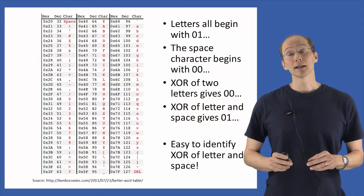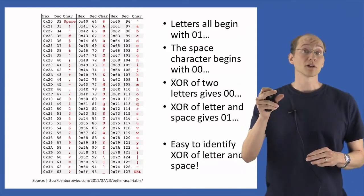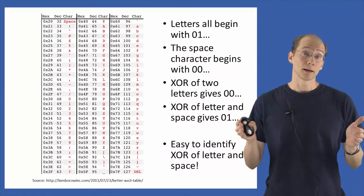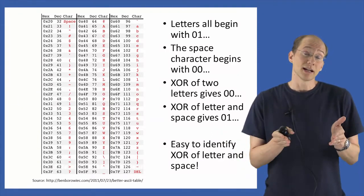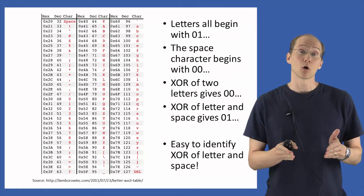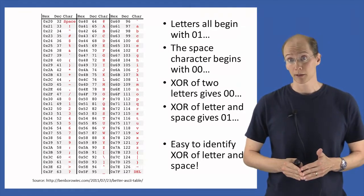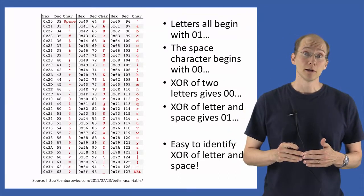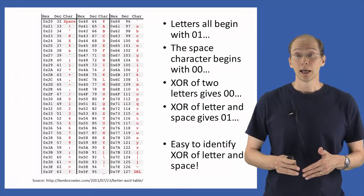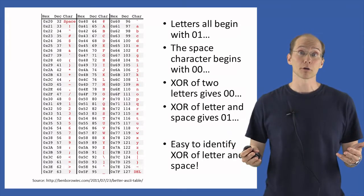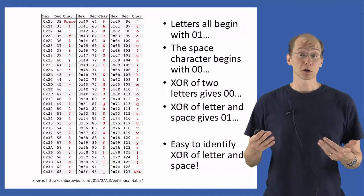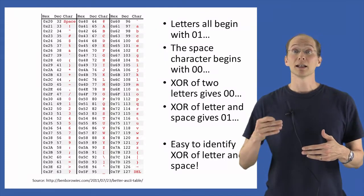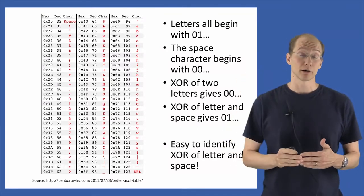This means that if we have the XOR of any two letters, we get some byte with prefix 00, but if we have the XOR of a letter and a space character, we get the prefix 01. This allows an attacker to identify the XOR of a letter and a space. If the attacker has the XOR of two messages, it can look byte by byte and guess that any byte with a prefix of 01 corresponds to the XOR of a letter and a space. Punctuation characters and pairs of spaces are expected to be much less frequent than pairs of two letters or a letter and a space.